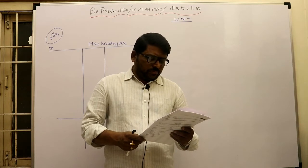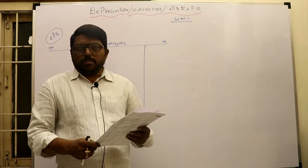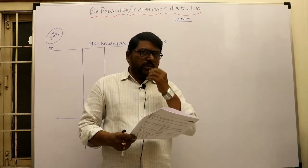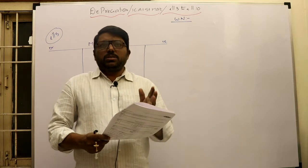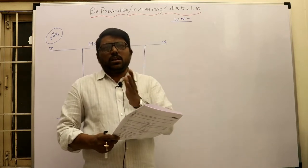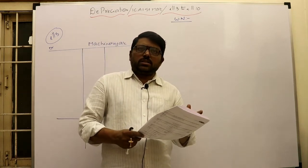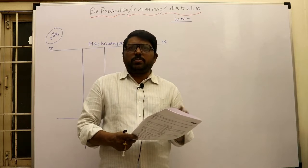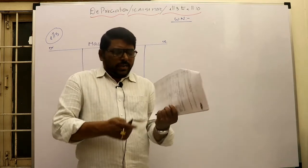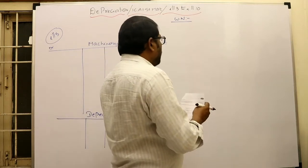Today let us go to the third illustration problem: the Sum of Years of Digits method. This method is very similar to the Written Down Value or Diminishing Balance method. In the diminishing balance method, depreciation is heavy in the earlier years and less in the latter years — it is always in a decreasing pattern. Similarly, in this method also, depreciation decreases year by year.